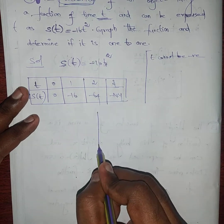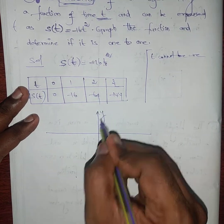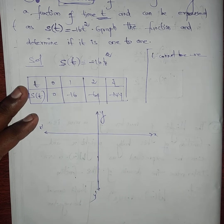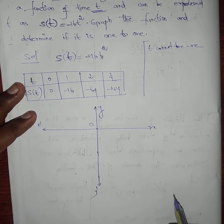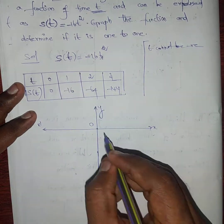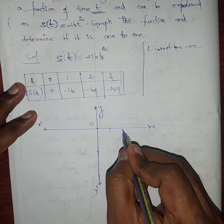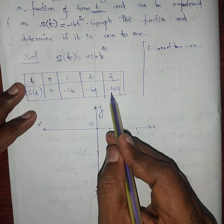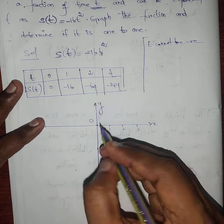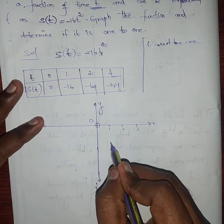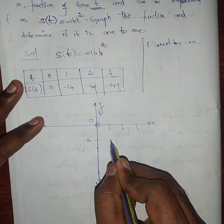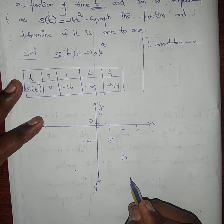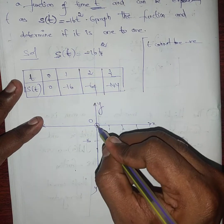Now I will plot the graph. Setting up axes: this is y, x-dash, x, and y-dash, with origin O. On the x-axis I mark 0, 1, 2, 3. I won't plot the negative y-axis since going to -144 is impractical, so I take approximate values. Points: (0, 0), (1, -16), (2, -64), (3, -144).